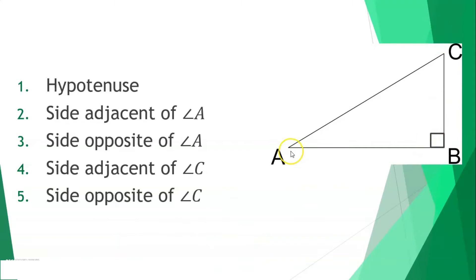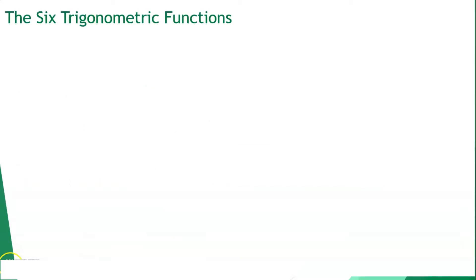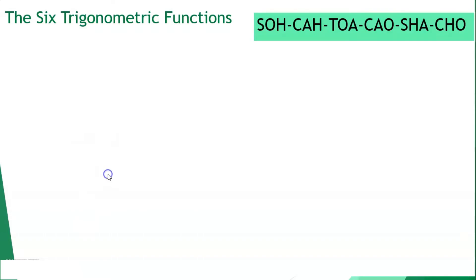Given right triangle ABC with the right angle at B, the hypotenuse is side AC. The side adjacent to angle A is side AB, and the side opposite angle A is side BC. The side adjacent to angle C is side BC, and the side opposite angle C is side AB.